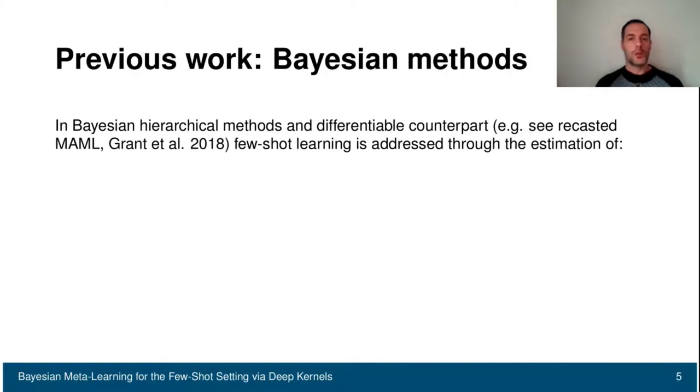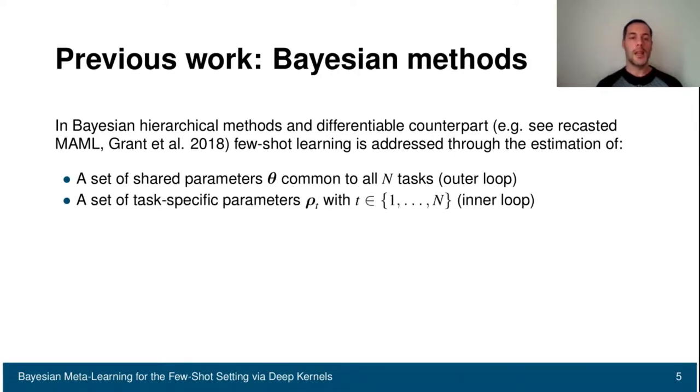Let's try to focus on Bayesian hierarchical methods and some of the differentiable counterparts, for instance, MAML that has a Bayesian interpretation. They want to find two sets of parameters. We have a set of shared parameter theta that is common to all tasks that is optimized in the outer loop of MAML, and then a set of task-specific parameter rho that is instead optimized in the inner loop of MAML.